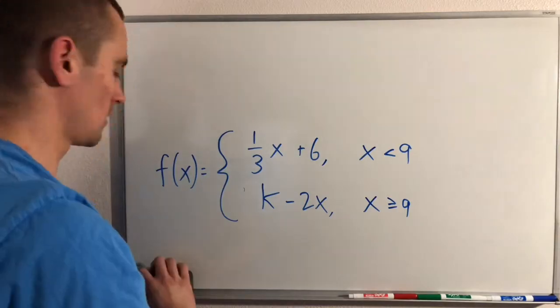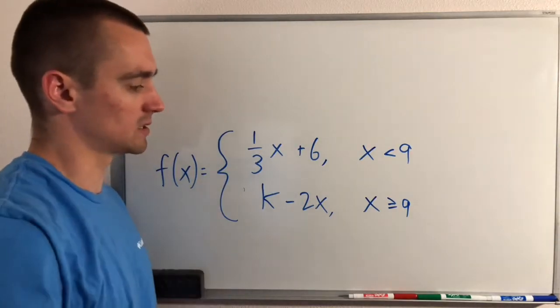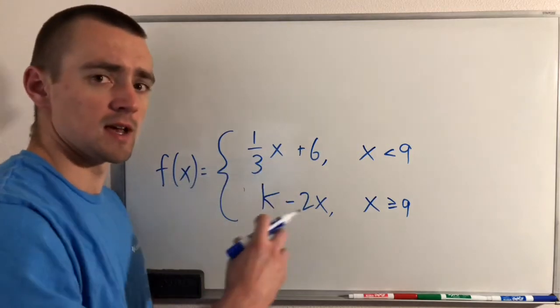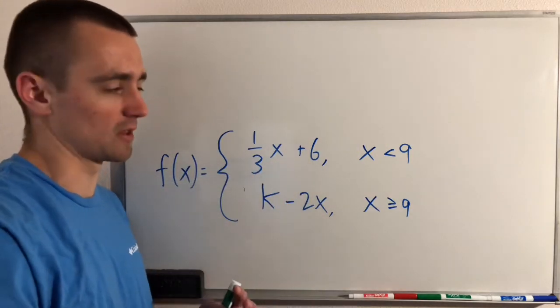To do that, all we need to do is plug in x equals 9 into each of these pieces and set them equal to each other to make sure that they line up at that point.